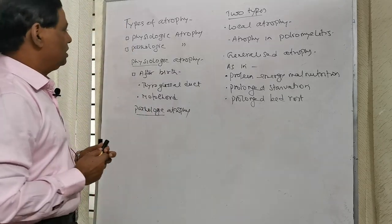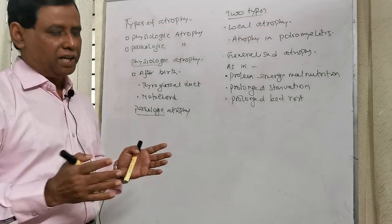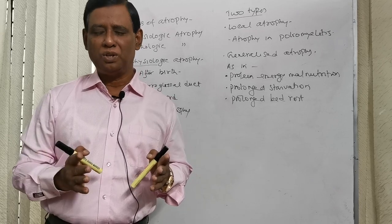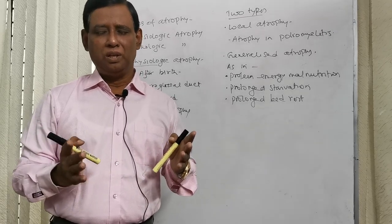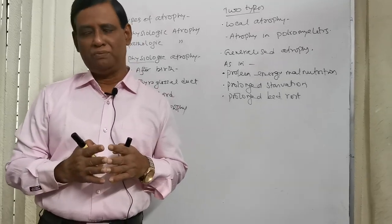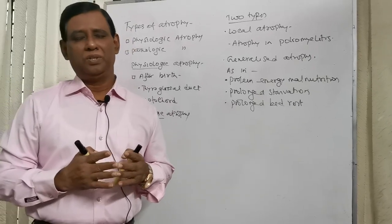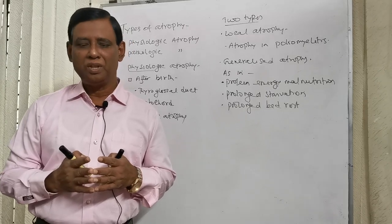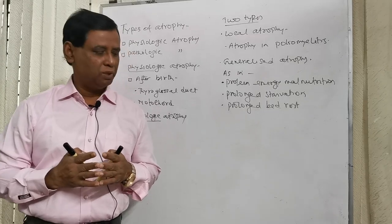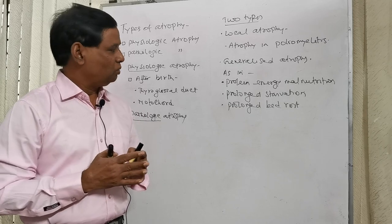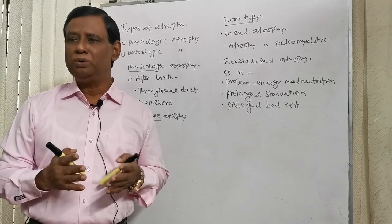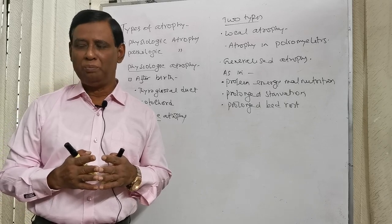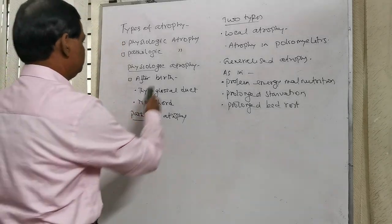Now, atrophy means reduction of size of a cell due to loss of cell substances. As I told you in the first class, this includes reduction in the number of mitochondria, number of endoplasmic reticulum, and the amount of cytosolic proteins. Now we want to know how a cell is reduced in size — that means what is the mechanism of atrophy.